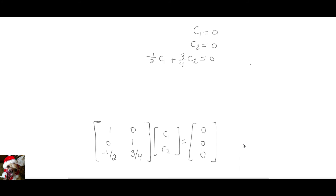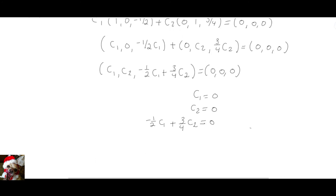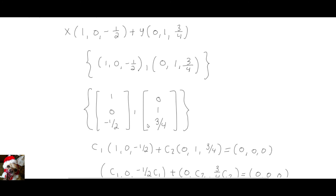You can see that the vectors appear in column form and they form the basis. They form the basis for the null space. The vectors visible in column form here correspond to those same basis vectors. That is the preference — why people choose the column form answer over the row form answer.